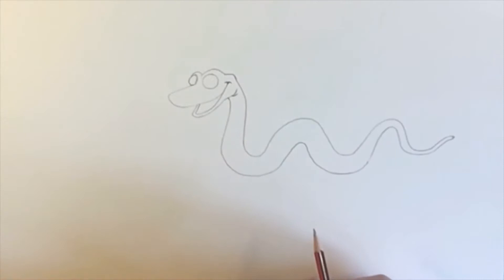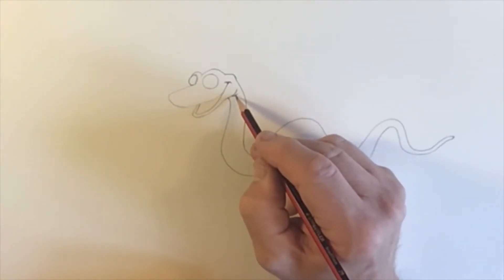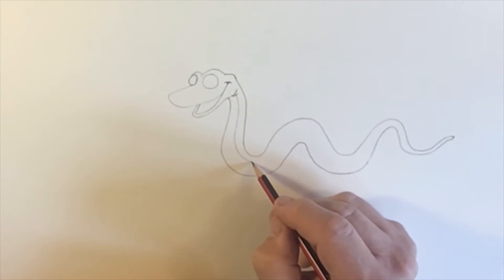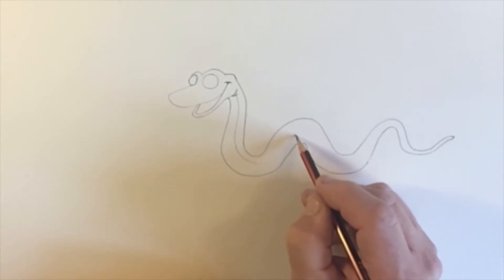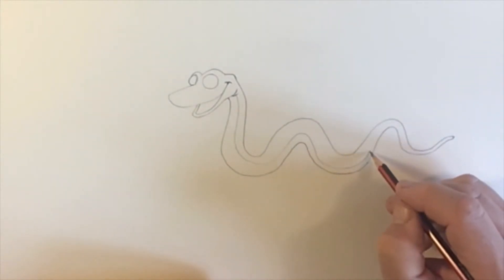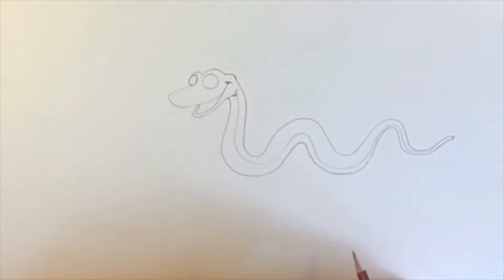Now snakes tend to have a lighter bit underneath their tummies. From the neck we're going to put a line coming down like this. And then it's going to come up down a bit lower. And then over here like this. And over here like this. Until it gets over this side. Almost to the end, but not quite.